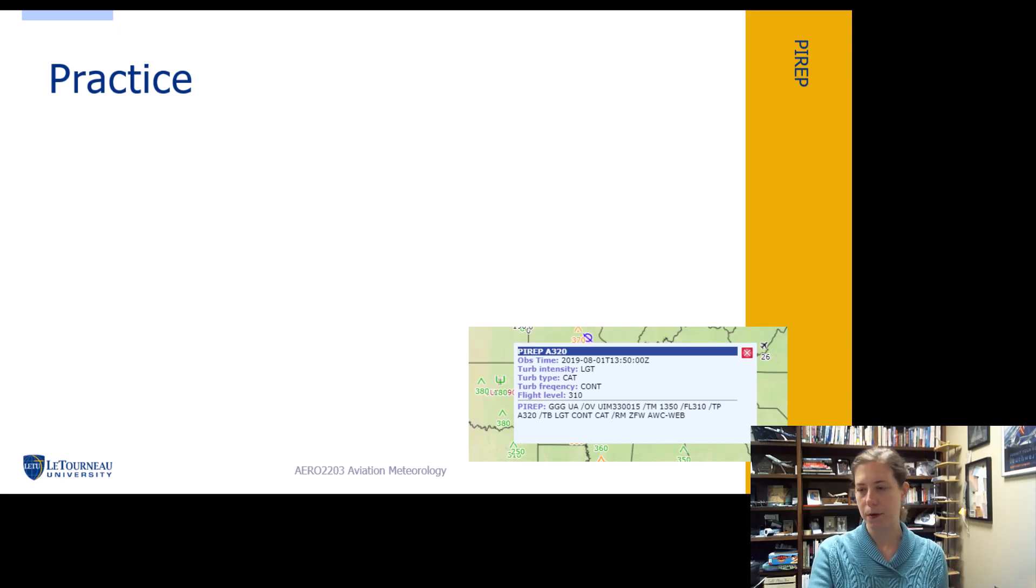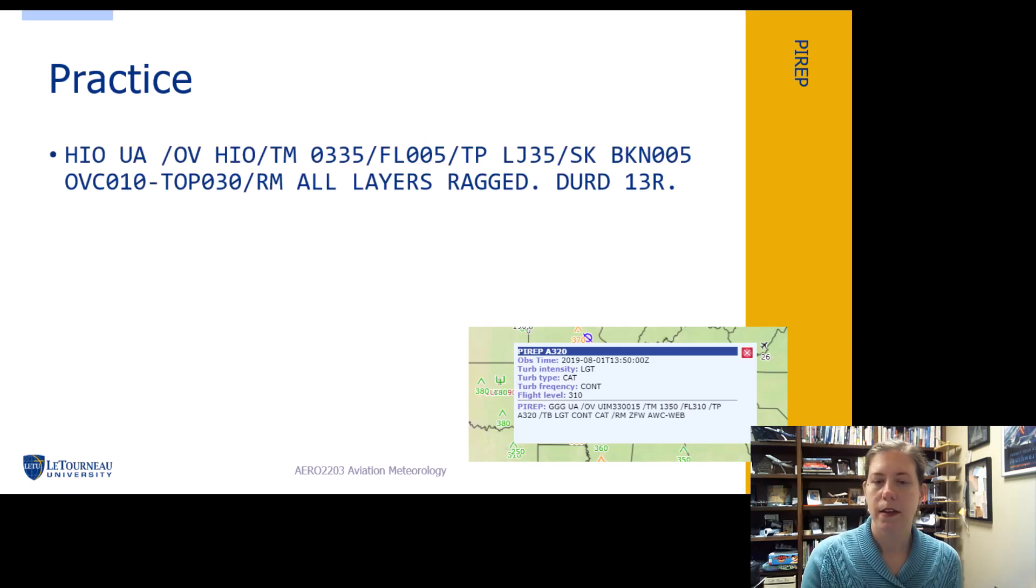So let's look at some practice here. So here we have an aircraft. It reported that it saw something over this VOR. It was at 335 UTC. It was at 500 feet MSL that this was reported. This is a Learjet 35. I don't know all the aircraft types. I've gotten to know a few over the years. The sky they found was broken at 500 feet MSL. Remember, we're giving heights in MSL here. Also, there was more clouds that they found overcast at a thousand feet MSL, and they got on top at 3,000 feet. All layers ragged, so very uneven layers. And it looks like they reported it while they were in a descent for runway 13 right.